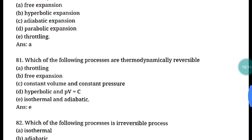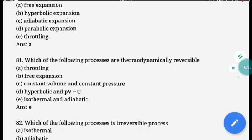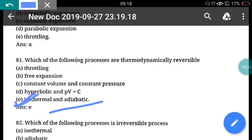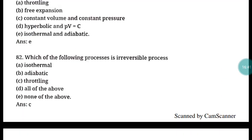Question 81: Which of the following processes are thermodynamically reversible? The isothermal process and the adiabatic process are thermodynamically reversible. In isothermal, temperature is constant; in adiabatic, heat is constant. Question 82: Which of the following is an irreversible process? Throttling is an irreversible process — when gas is allowed to expand through a minute aperture, that is throttling, and it is irreversible.